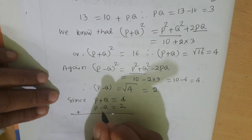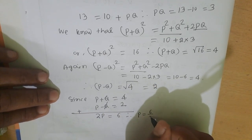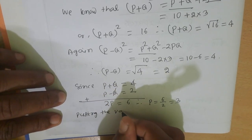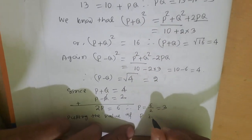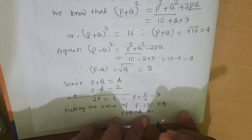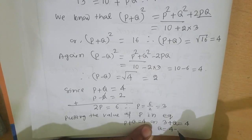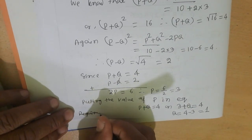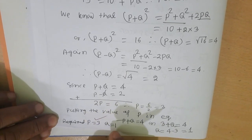Adding P + Q = 4 and P − Q = 2: the Q terms cancel, giving 2P = 6, therefore P = 6/2 = 3. Putting the value of P into P + Q = 4: 3 + Q = 4, therefore Q = 4 − 3 = 1. The required answer is P = 3 kN and Q = 1 kN. Next, I will solve another problem.